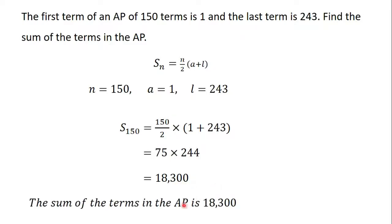This means that the sum of all the 150 terms in the AP is 18,300.